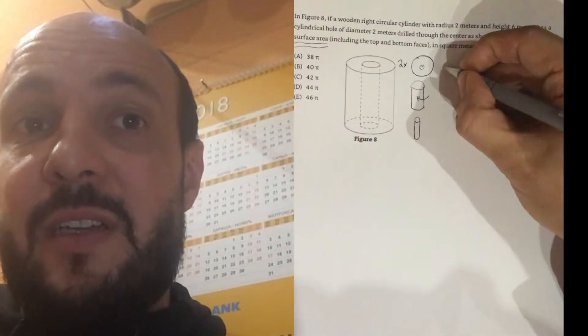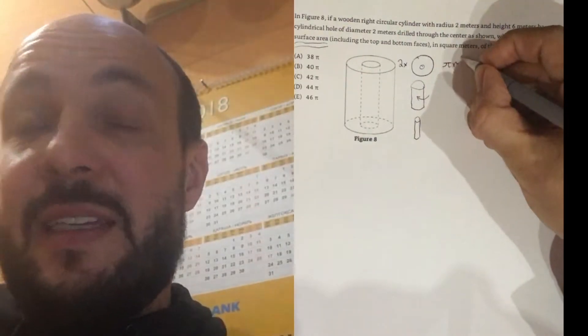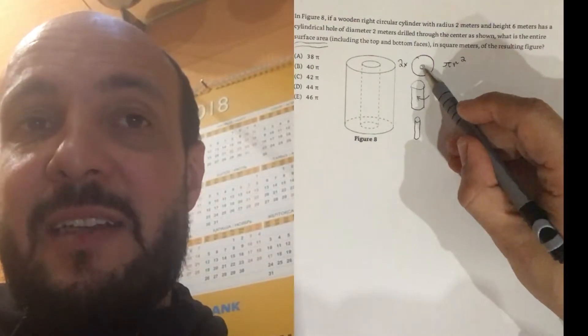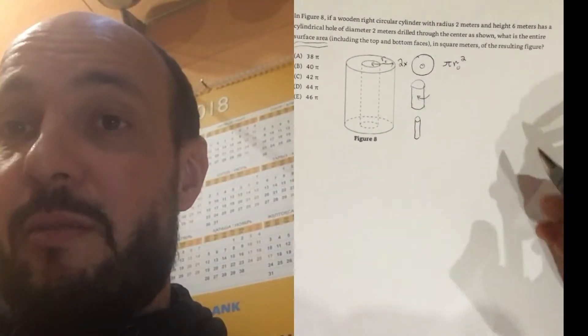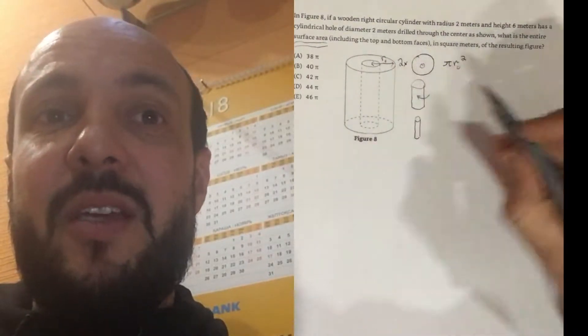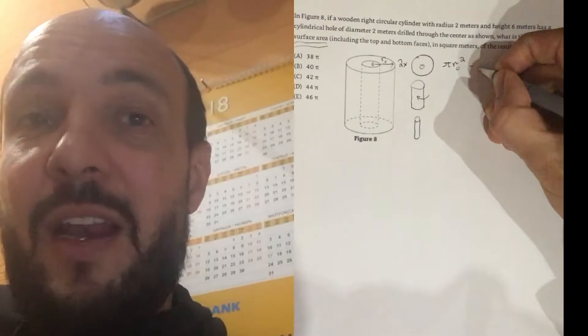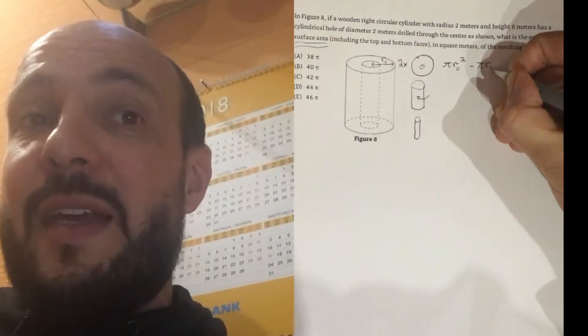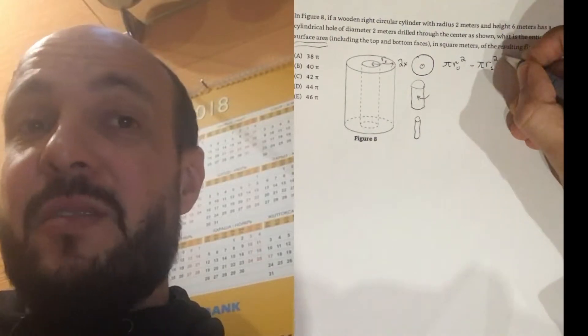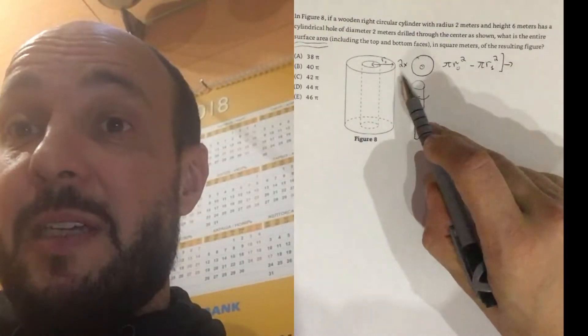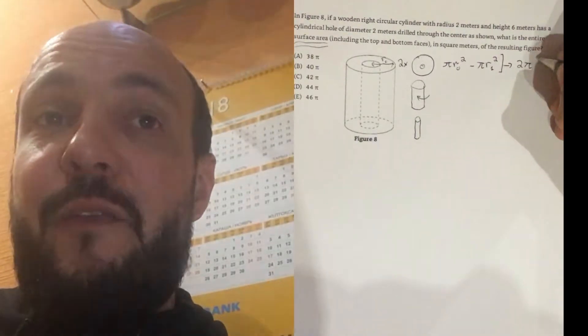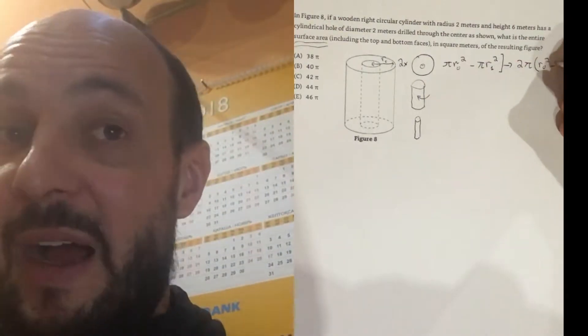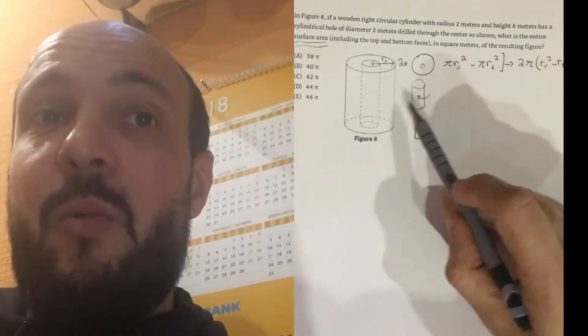Now, a circle has the formula pi r squared to give us the area. We're going to subtract this little circle from the middle. So, we need slightly different names for our two radii. Let's call our larger radius r0 and our smaller radius r1 so that we can distinguish them. So, we've got pi r0 squared, which is the area of the larger circle, minus pi r1 squared, which is the area of the smaller circle. And we have to times it by 2 because there's a circle on the top and a circle on the bottom. So, our formula for the area of those two circles will be 2 pi times by r0 squared minus r1 squared.